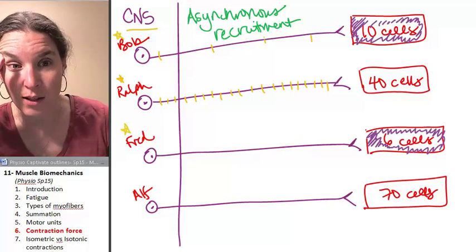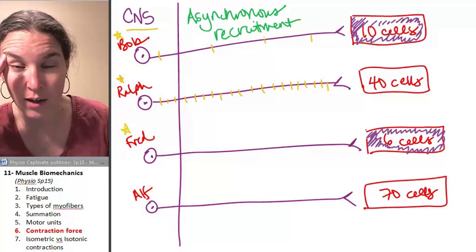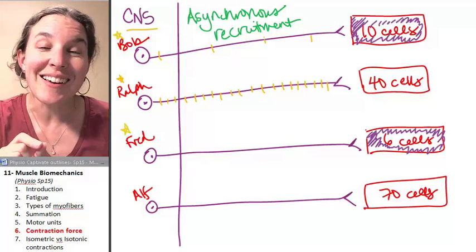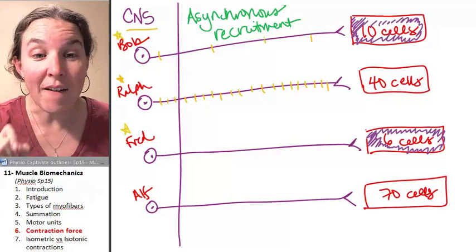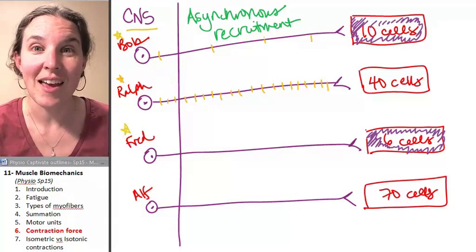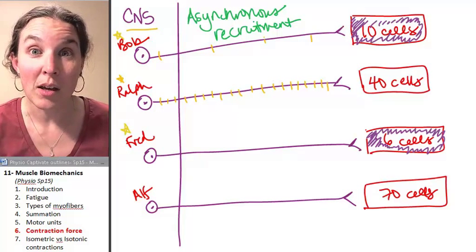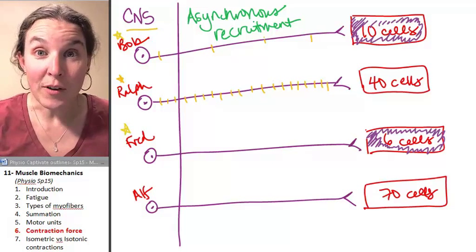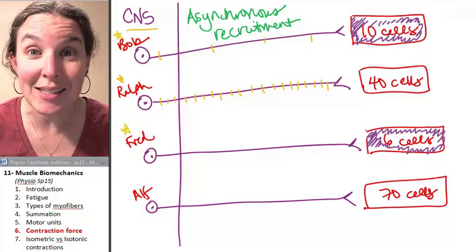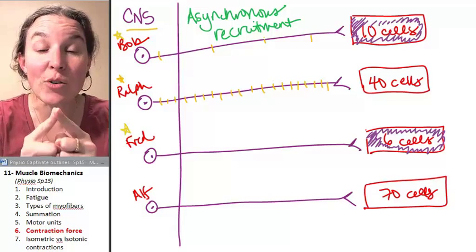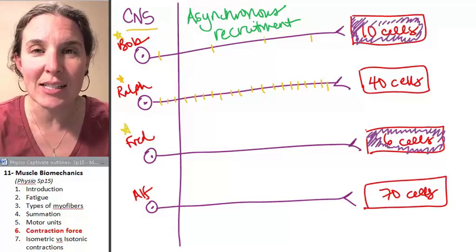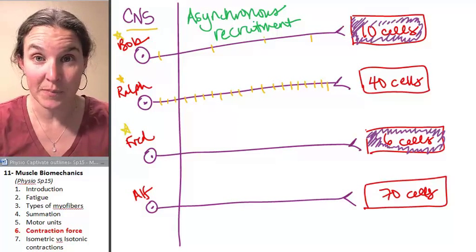why? Why would we do that? Seriously, who are these people and why are they contracting like this? Because when Alf is not firing, he's resting. And then when Bob is firing for him, Alf gets to rest. Then it's Bob's turn to rest. This asynchronous recruitment allows or reduces the chances of fatigue in the muscle.